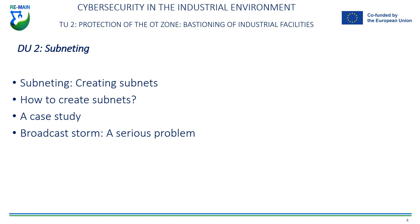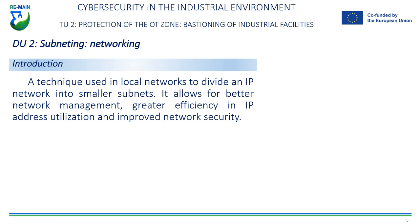When interconnecting subnets, special care must be taken to avoid so-called broadcast storms. Subnetting, also known as subnetworking, is a technique used in local networks to divide an IP network into smaller subnets.